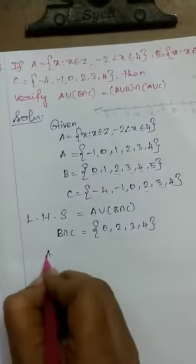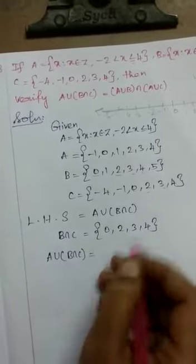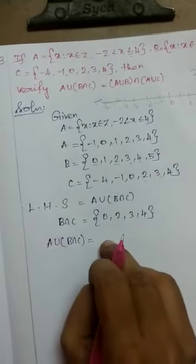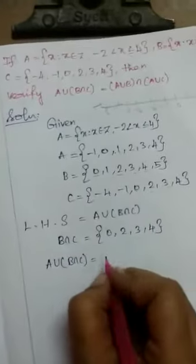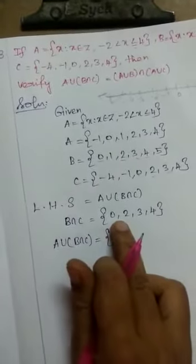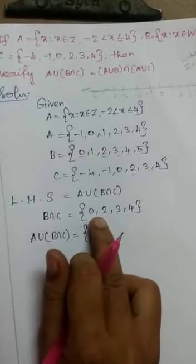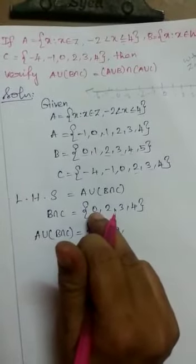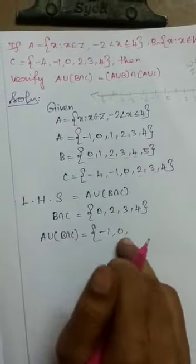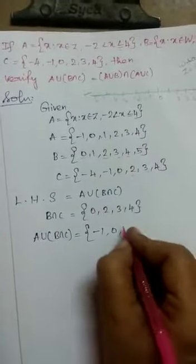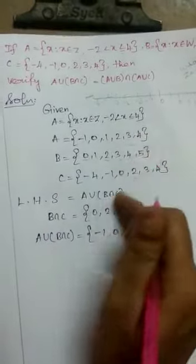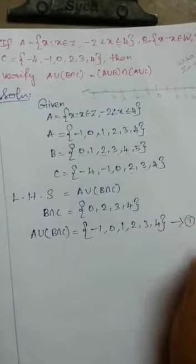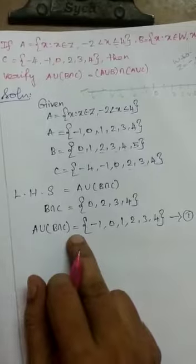So B intersection C equals {0, 2, 3, 4}. This is the first result. Next, A union of B intersection C. Taking the union: -1, 0, 1, 2, 3, 4. Avoiding repeats. This is Result 1. The final answer for LHS is Result 1.